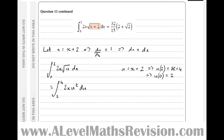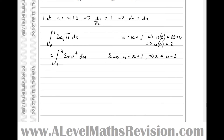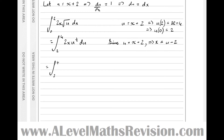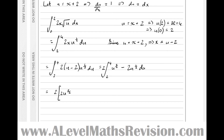Replacing x with (u minus 2), we have the integral between 4 and 2 of 2(u minus 2) times u to the half du. Taking 2 out as a factor and multiplying out the bracket: u times u to the half is u to the 3 over 2, take 2u to the half. Integrating: u to the 5 over 2 divided by 5 over 2 (times 2 fifths), take 2u to the 3 over 2 divided by 3 over 2 (times 2 thirds), between 4 and 2.